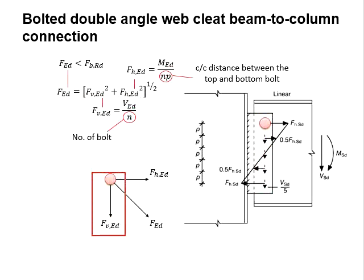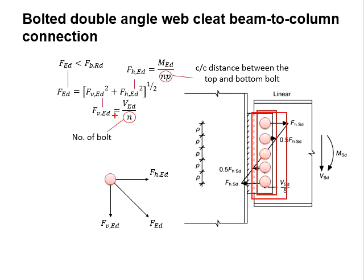Therefore, the vertical component of the load will be equal to V_Ed, which is this, divided by the number of bolts. In this case, there will be 5 bolts here. Therefore, the n here will be equal to 5.